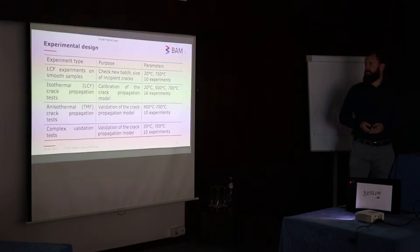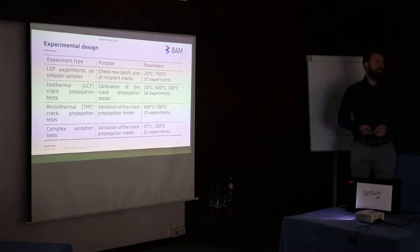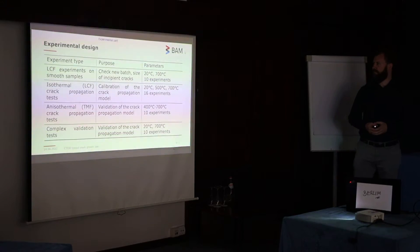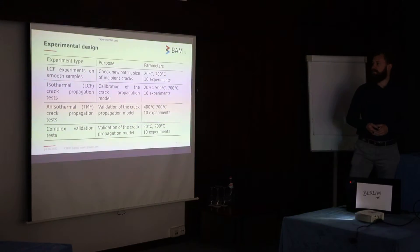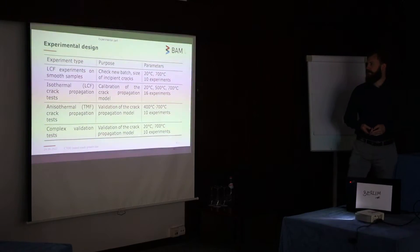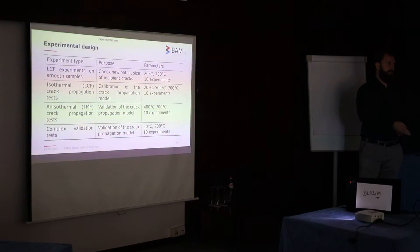For the experimental design, we have four different stages. We started with LCF experiments on smooth samples, used to check our current batch of material and compare it to previous batches, to see whether the material is still behaving the same way and to assess the size of incipient cracks at the end of the LCF experiments. The second part were isothermal crack propagation tests, used for calibration of the crack propagation model, at three temperatures: 20°C, 500°C, and 700°C. The anisothermal TMF crack propagation tests are done in a temperature range from 400 to 700°C with 5 K/s temperature rate.